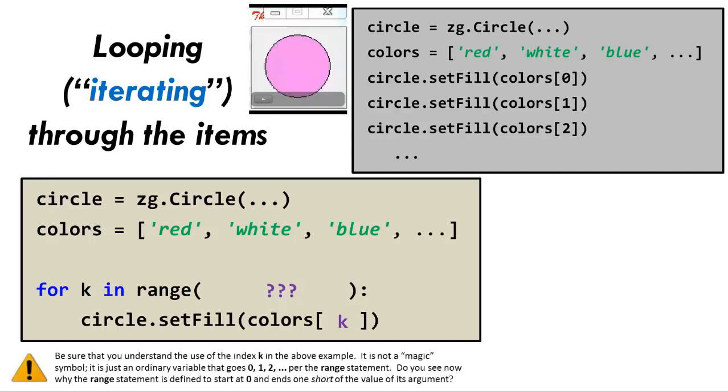Now be absolutely sure that you understand the use of the index k in this example. It is not a magic symbol. It is just an ordinary variable that goes 0, 1, 2, etc. per the range statement. It just so happens that that is exactly what we want to refer to the items in the sequence, one after the other.